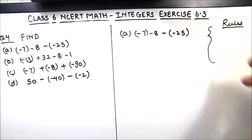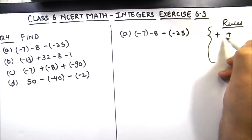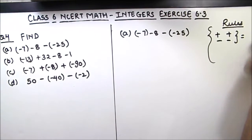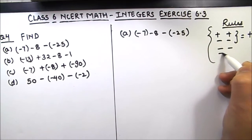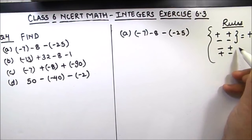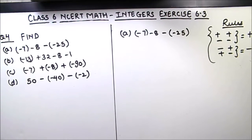There are two basic rules for integer addition and subtraction. First, when there are two integers with the same sign, we add the two numbers and the result is positive. Second, if the two signs are different, we subtract the two numbers and the result takes a negative sign. Remember: same signs give positive, different signs give negative.